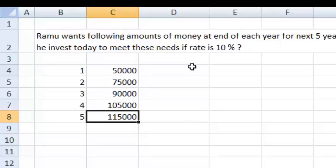Let's say I want to invest some money which will grow for 1 year at the rate of 10% and become 50,000. Similarly, another sum of money will grow for 2 years at the rate of 10% and become 75,000 and so on. So instead of treating this as one single question, let's treat it as 5 different questions.